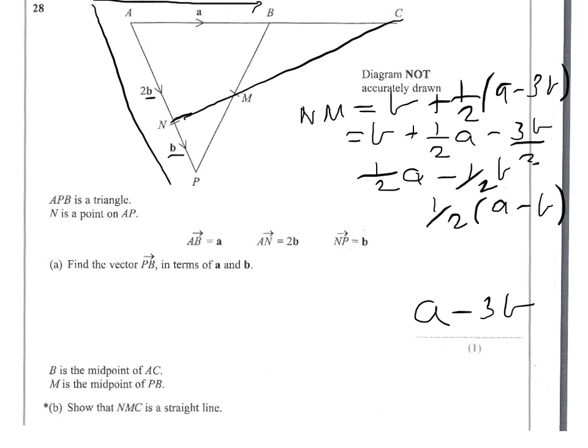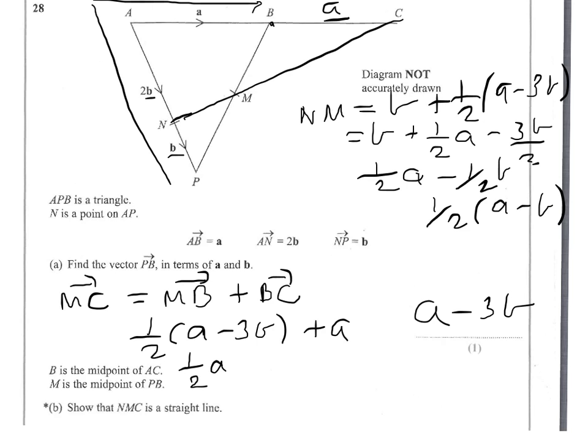So NM then is a half of a minus b. Now if we look at MC, MC will equal MB plus BC. Well MB is going to be a half of a minus 3b. And then we're going to add on BC, which is a, as B is the midpoint. So plus a. If I expand my brackets here, I have a half a minus 3b over 2 plus a. Now a half a plus a gives me 3 over 2a.